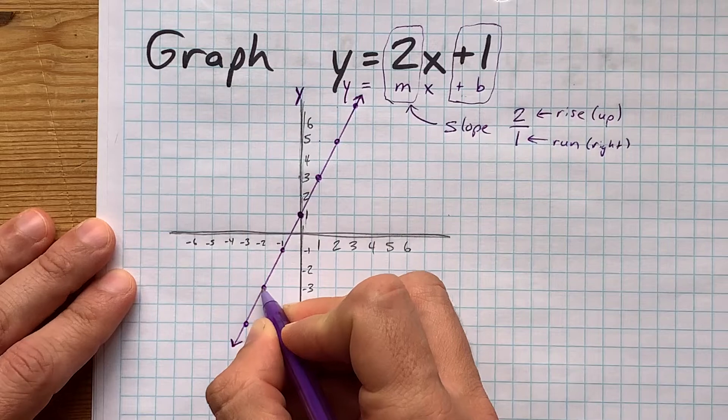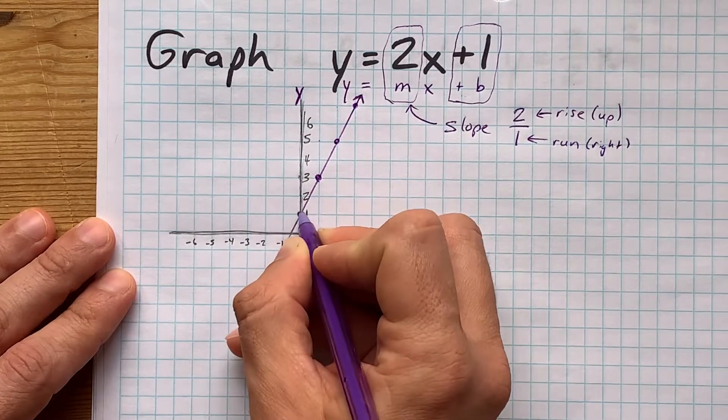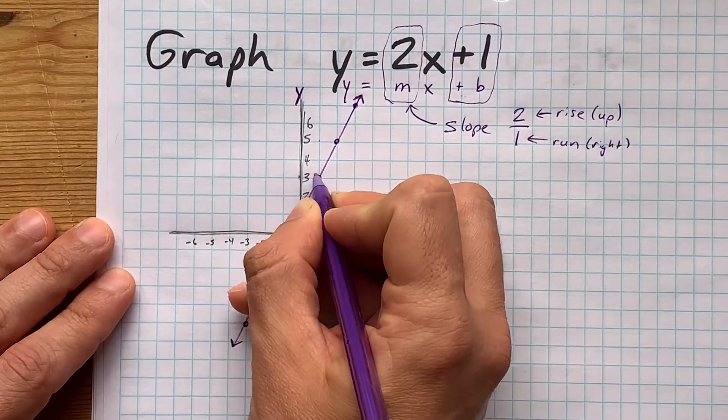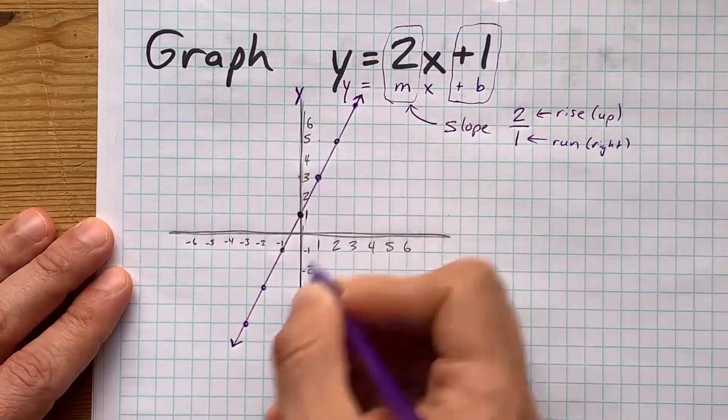Up 2, over 1, up 2, right 1 — continuing to plot points across the grid by repeating the slope pattern.